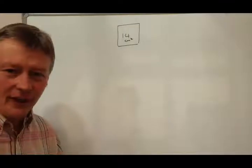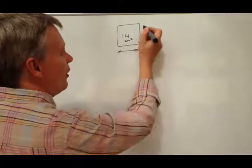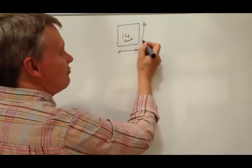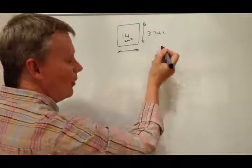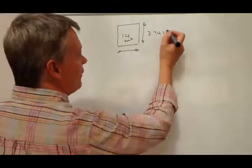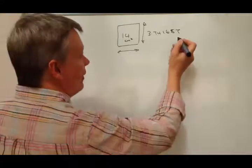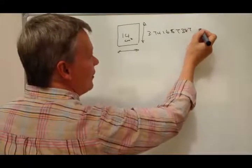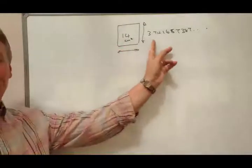Now if you work that out on the calculator it means that the sides of this square are some really long number which is 3.741657387 dot dot dot and you can go on a little bit further than that. It's not good enough.